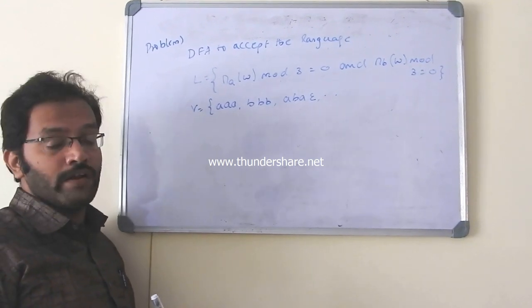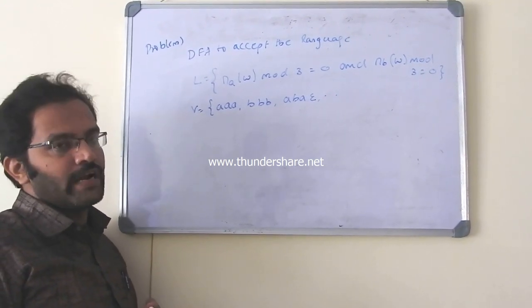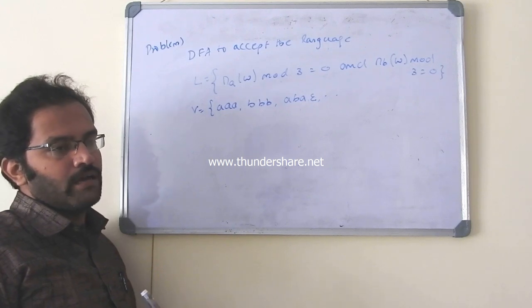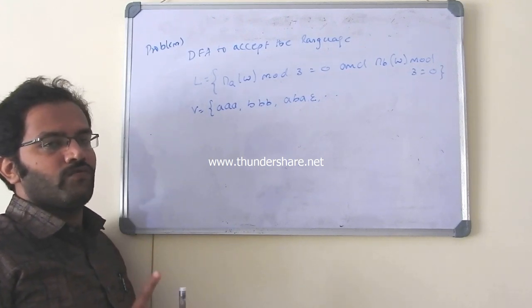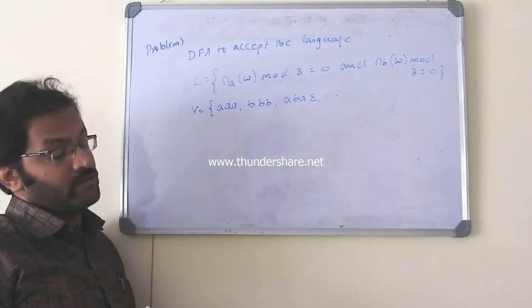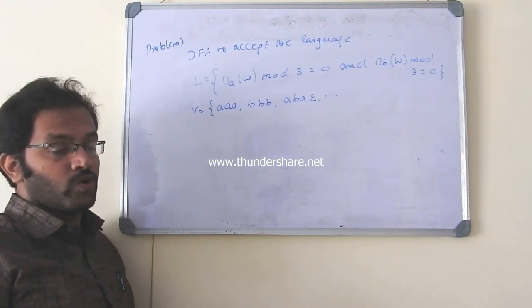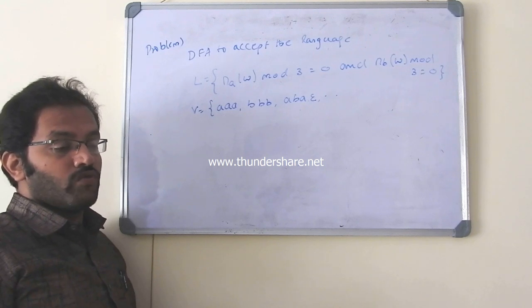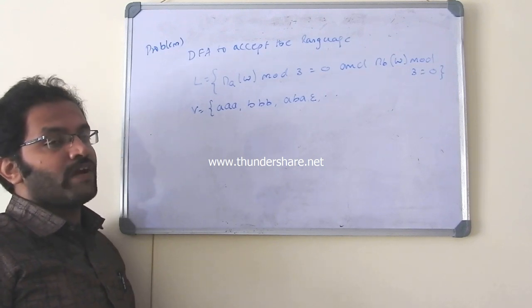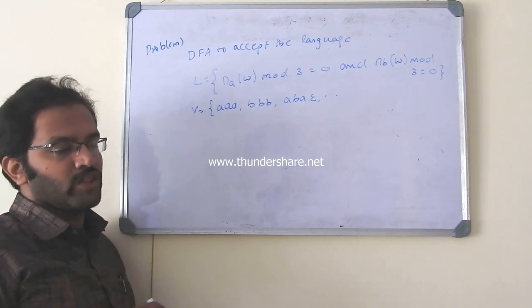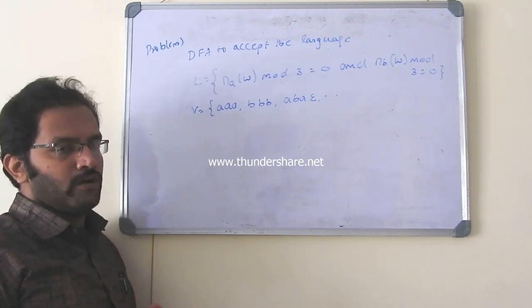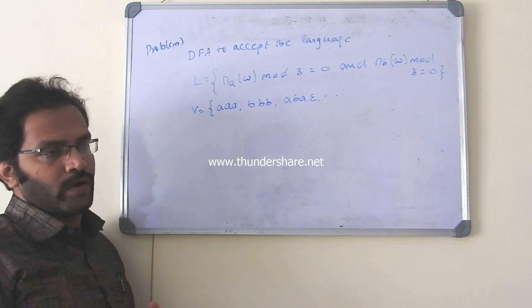But now, when you talk about this way of writing automata, we should have other way of calculating to find the states. How is the question? Earlier, we had told that to know the number of states, we try to find the minimum string or length of minimum string. We add 1 to that. That could be the number of states required.